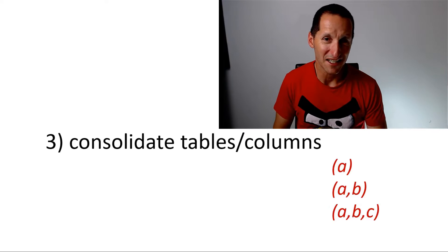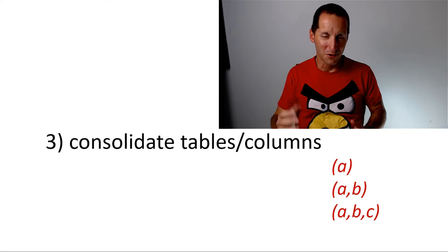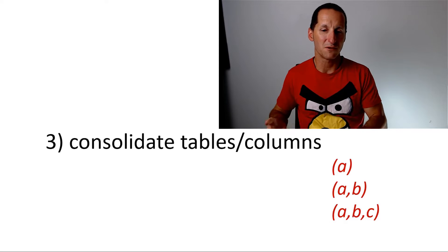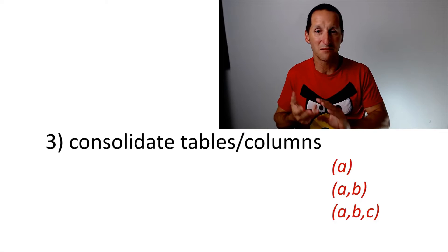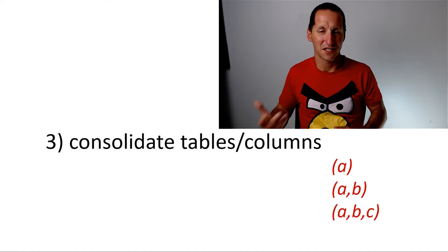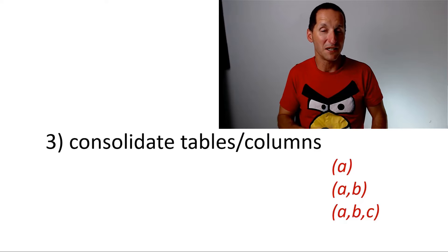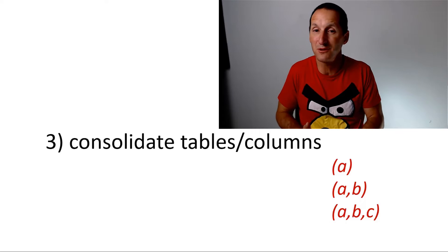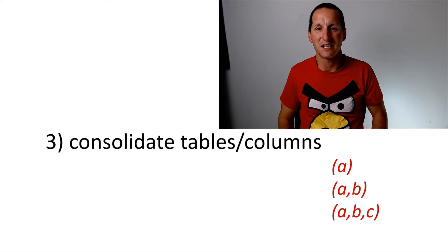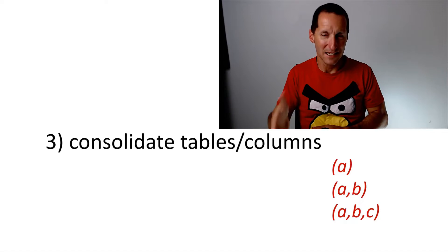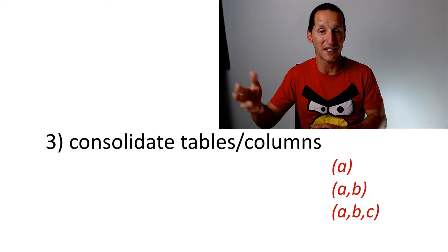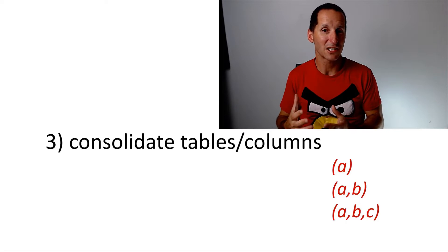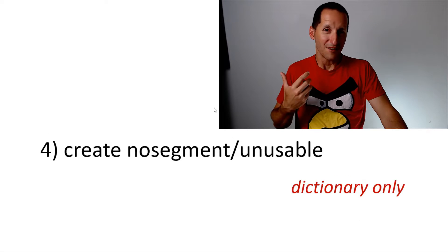Then you need to consolidate, because you may come up with three SQLs - one doing WHERE A equals something, one doing WHERE A and B, and one doing WHERE A and B and C. You wouldn't create three separate indexes; you would most probably create one index on A, B, and C. That way the query on A picks up the benefit, the query on A and B picks up the benefit, and the query on A, B, and C picks up the benefit as well. This is intelligent consolidation to come up with a smaller set of potential indexes.